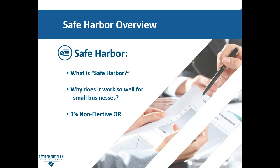Along with safe harbor, you have two specific options — you don't use both, it's one or the other. The first would be a 3% non-elective: every eligible employee has to receive 3% of their eligible compensation. The other option would be a 4% match: every eligible employee that defers will receive a match up to 4%. With the 3% non-elective, whether an employee puts in any money or not, they have to receive that contribution. The match is a true match where an employee has to contribute to receive it. The most common formula is dollar for dollar up to 3% and 50% of the next two, so an employee putting in 5% or greater would receive a 4% safe harbor match from the employer.